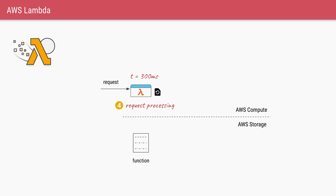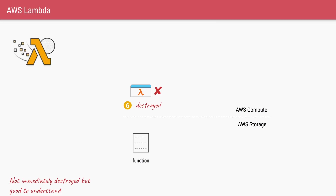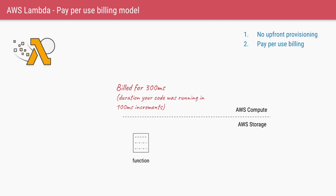Your function takes the request, does the processing — let's say in 300 milliseconds — generates some output, and processing is done. At this point, since your function is no longer required, AWS will destroy that function instance completely. You are billed only for the amount of time your function was actually running in AWS compute, so in our case, you are charged only for those 300 milliseconds.